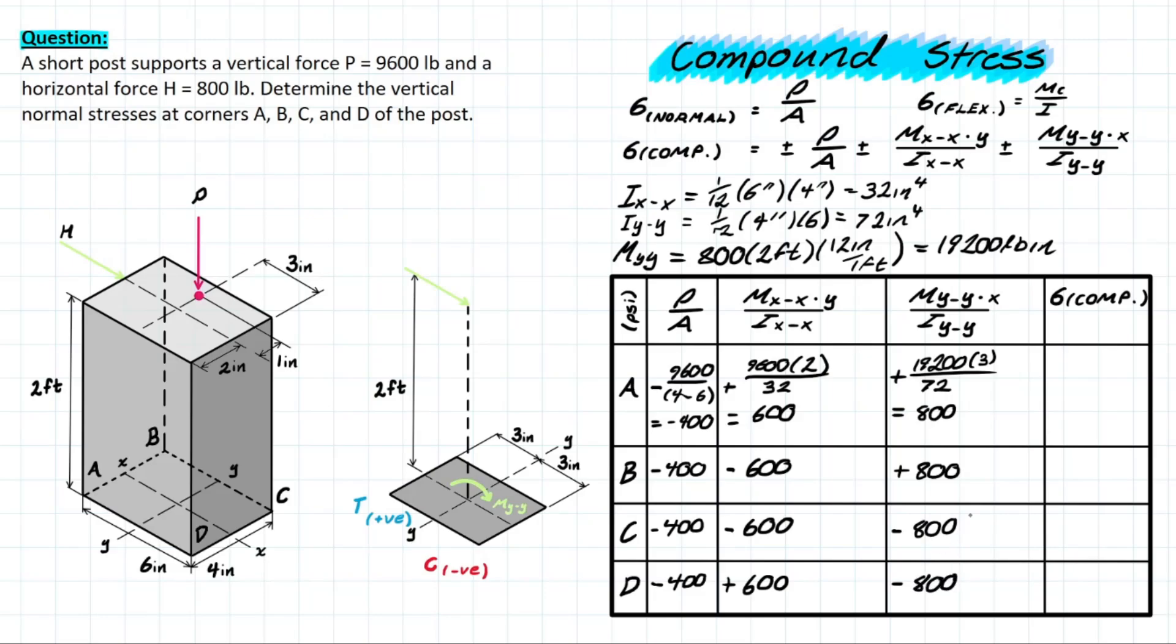And we can finally solve for the compound stress that's developed at each of these individual corners by simply taking the summation of each of these rows so negative 400 plus 600 plus 800 will give you 1000. For the next we're going to have negative 200 at point B, we have negative 1800 at point C and negative 1000 at point D. That's the problem, it's just visualizing what's going on with each of these external forces and how they're influencing the area of analysis with respect to flexural stress and normal stress.